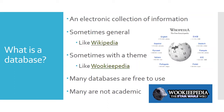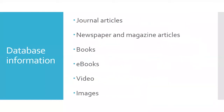Lots of databases are actually free to use online, but many databases are not academic databases, so we're going to focus on academic databases. Information stored in databases comes in lots of different types. Journal articles are one of the big ones, but other categories include newspaper and magazine articles, books, ebooks, videos, and images.